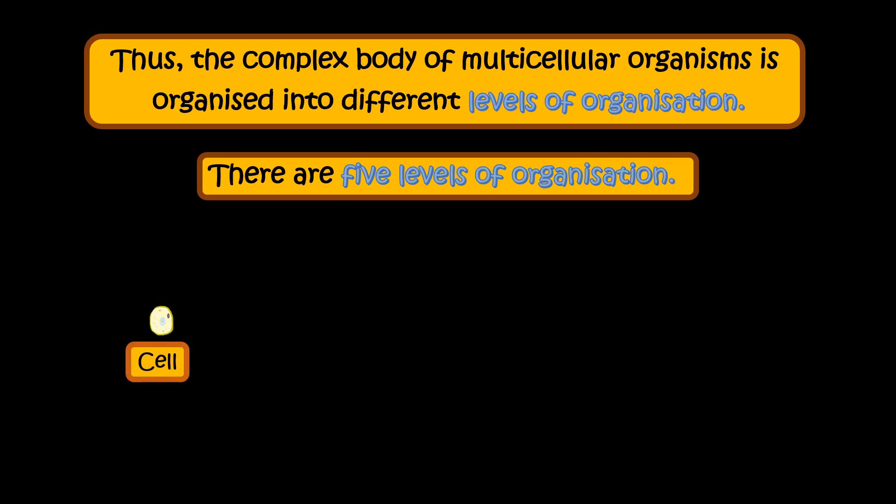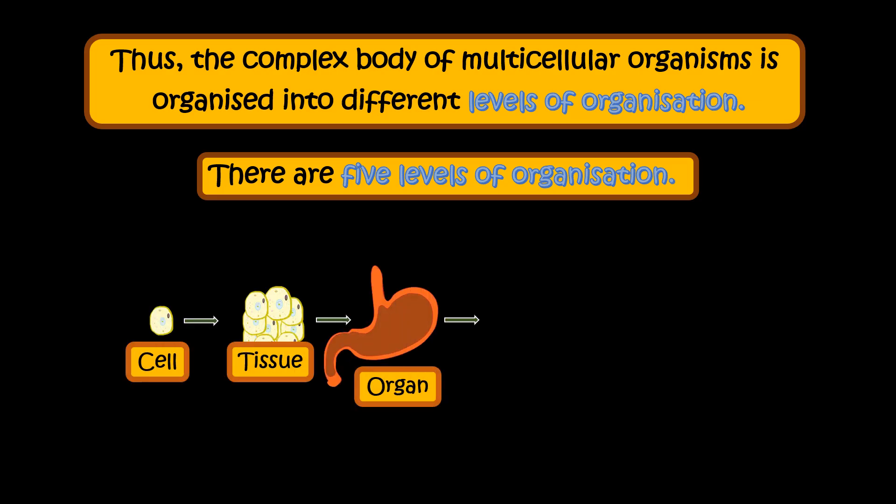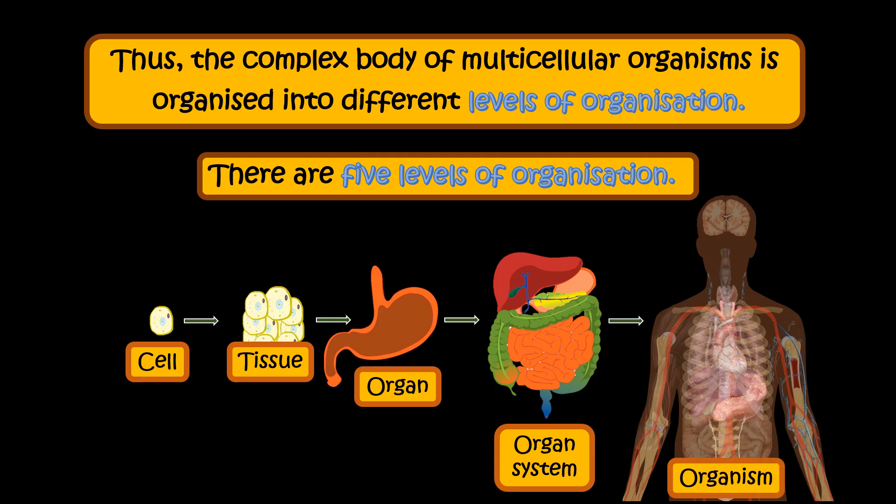They are cell, tissue, organ, organ system, and organism. Let's understand the levels of organization, one by one.